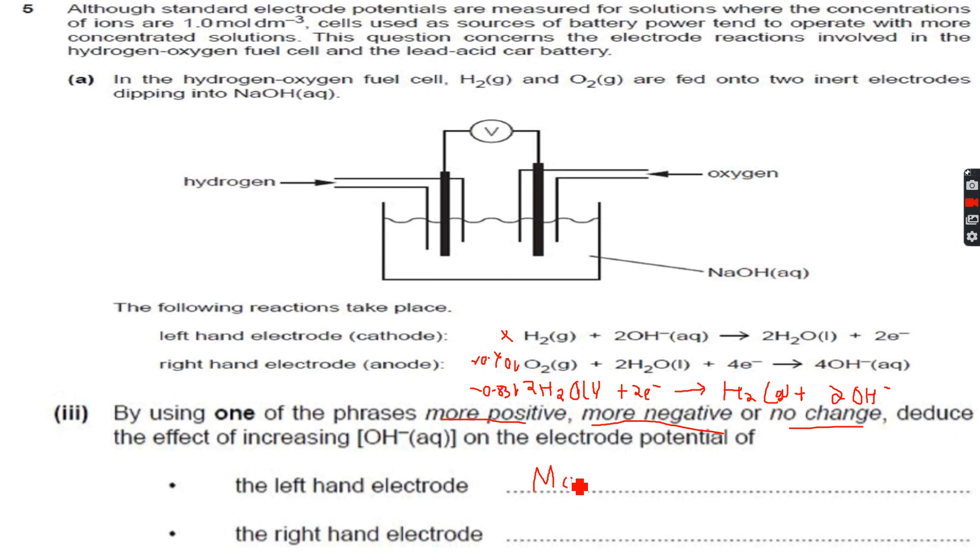The right hand electrode is the oxygen electrode. If we increase OH- again, equilibrium will shift to the left, and as equilibrium shifts to the left, this will also become more negative.